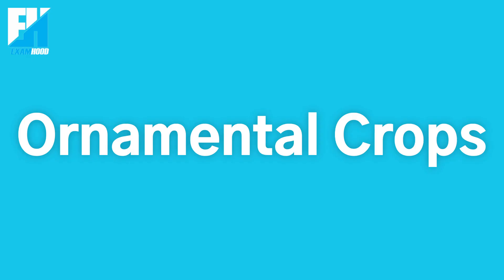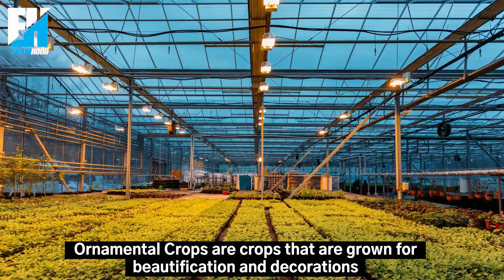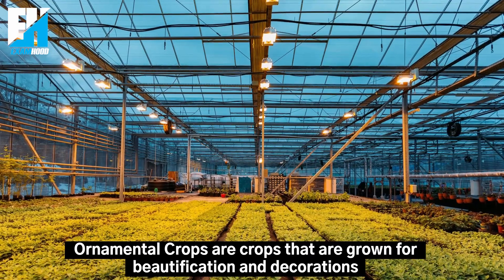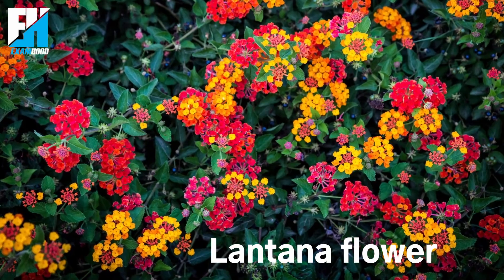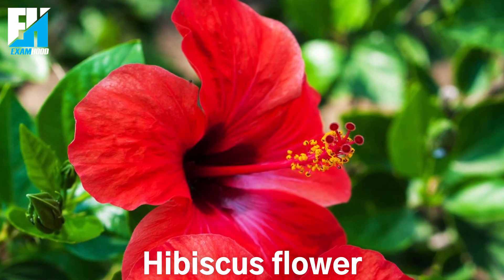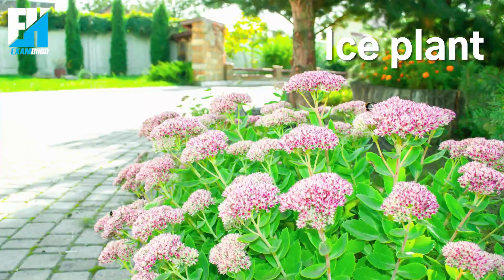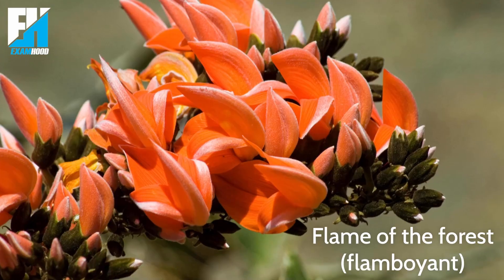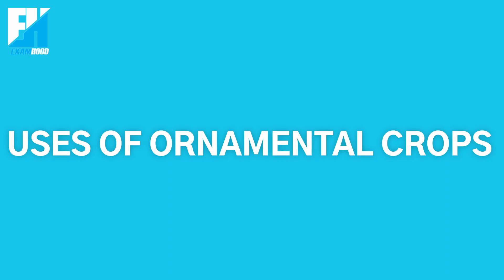In today's class, we will be talking about ornamental crops. Ornamental crops are crops that are grown for beautification and decoration. Examples of local ornamental crops include lawn grass, lantana flower, hibiscus flower, ice plant, sunflower, flame of the forest, and flamboyant.